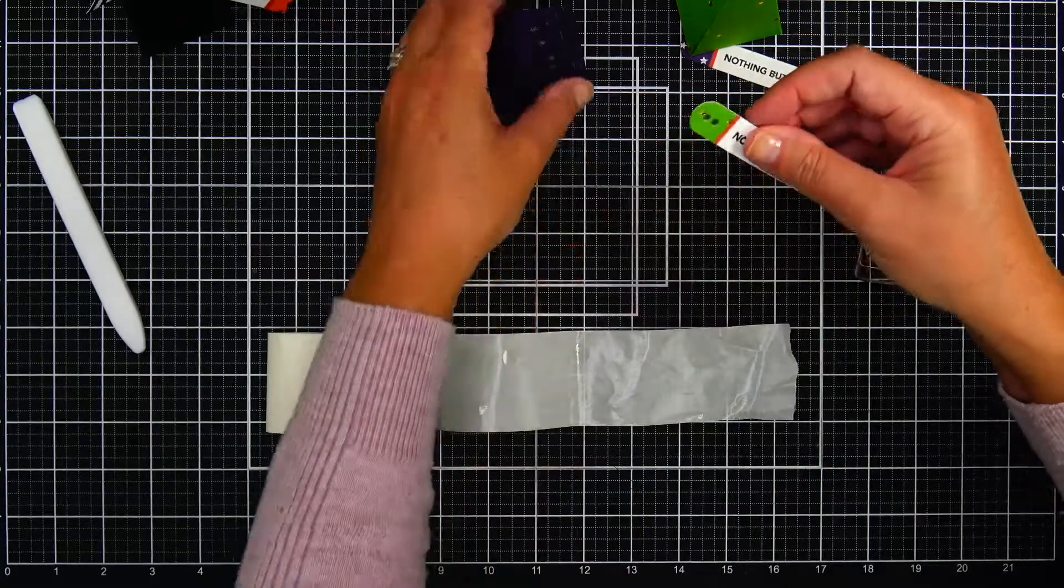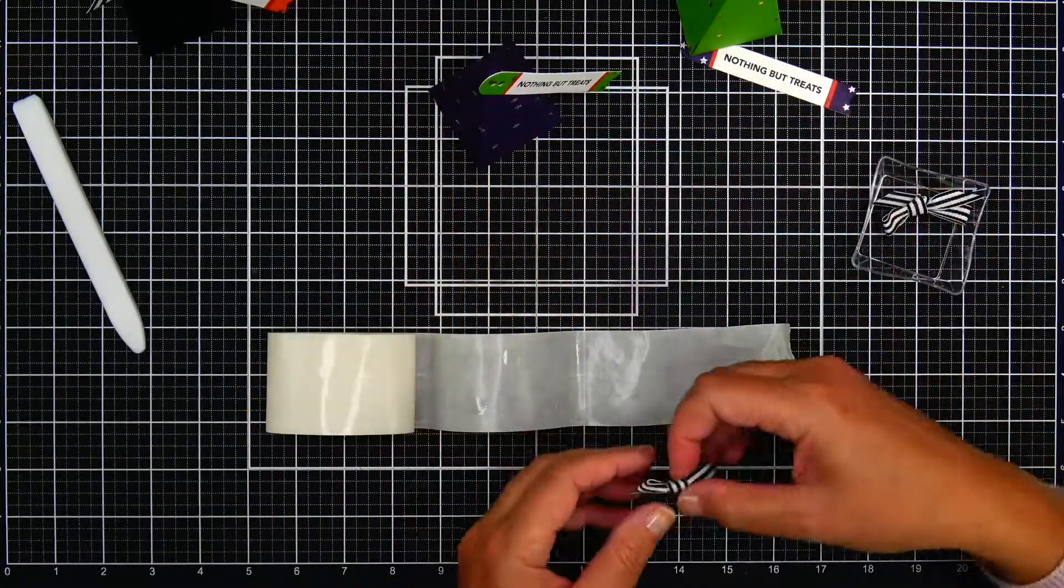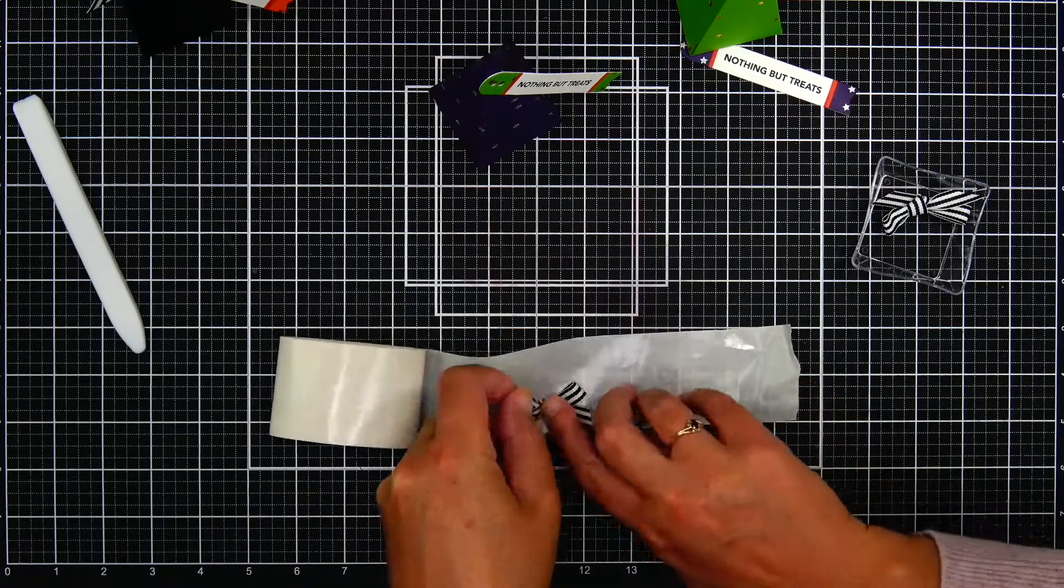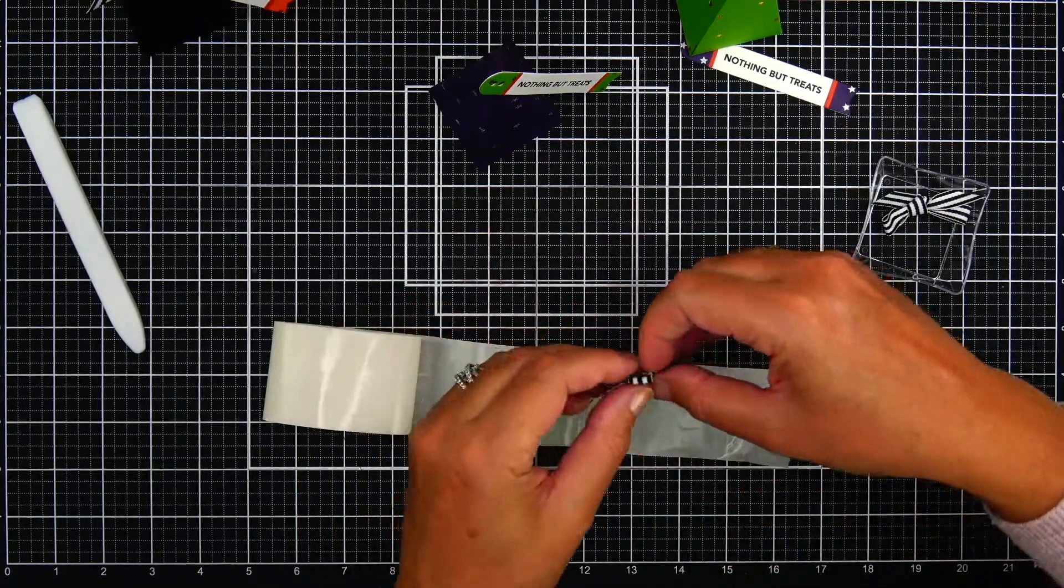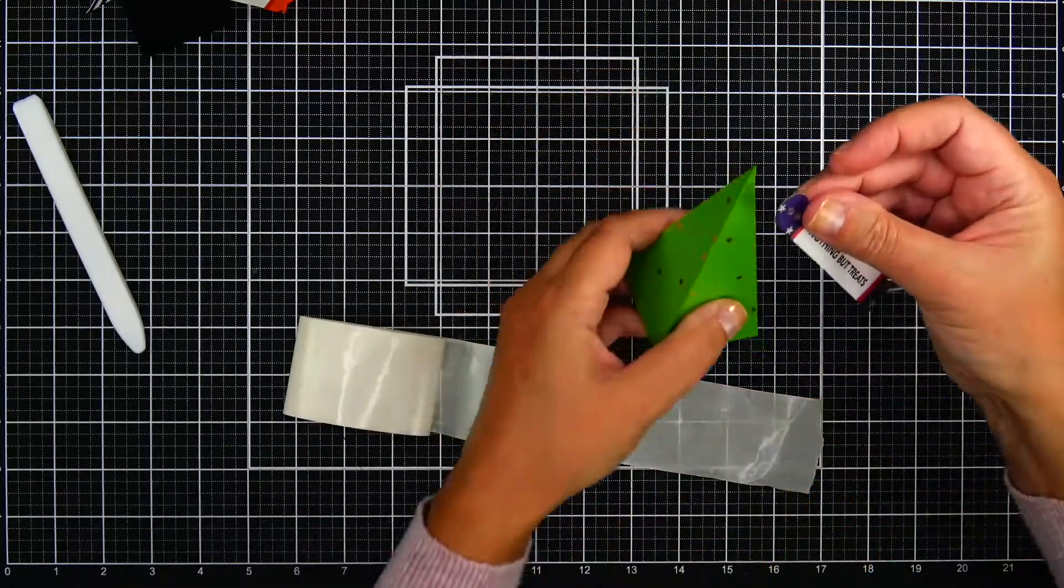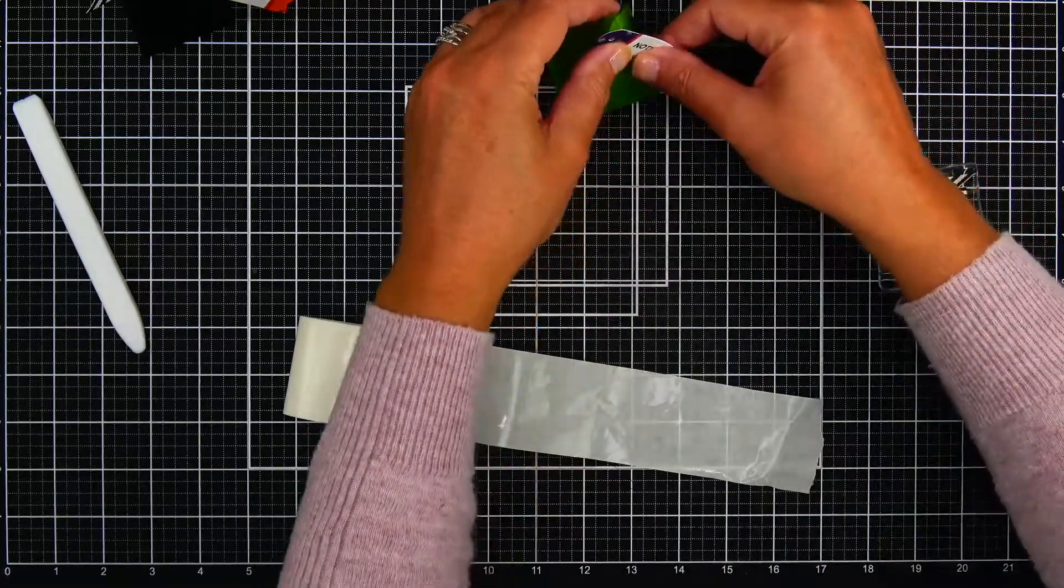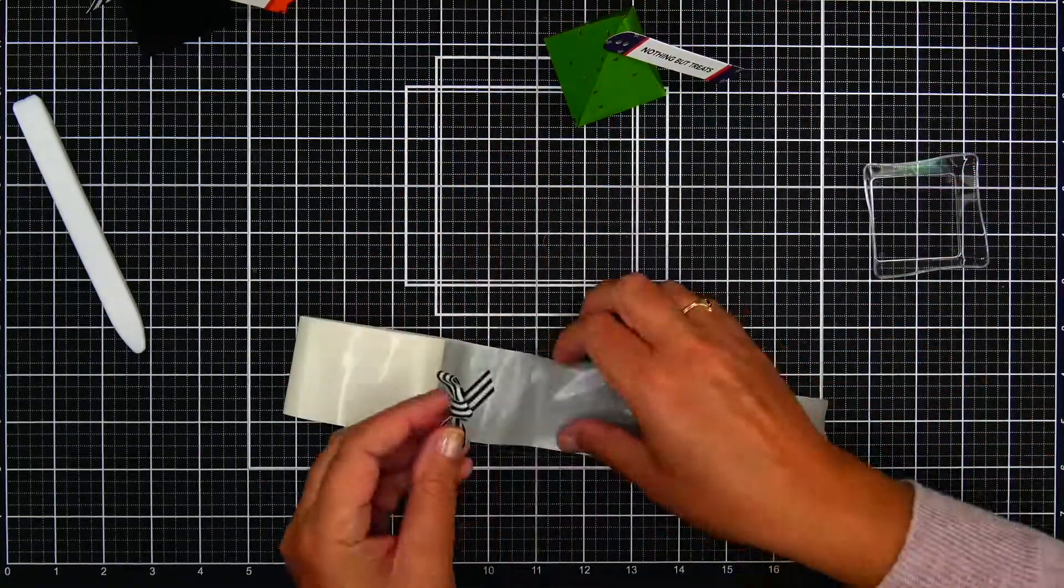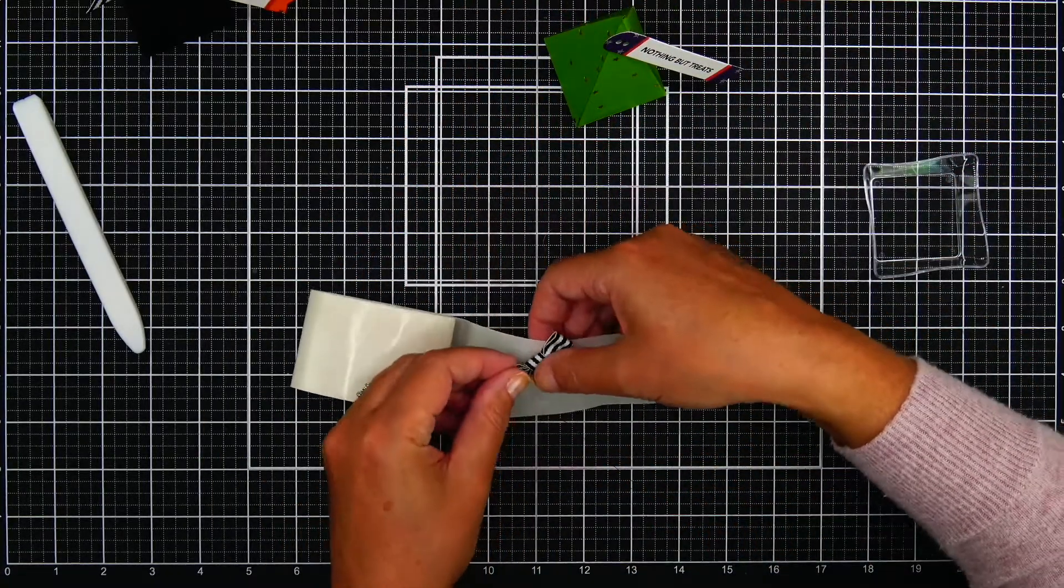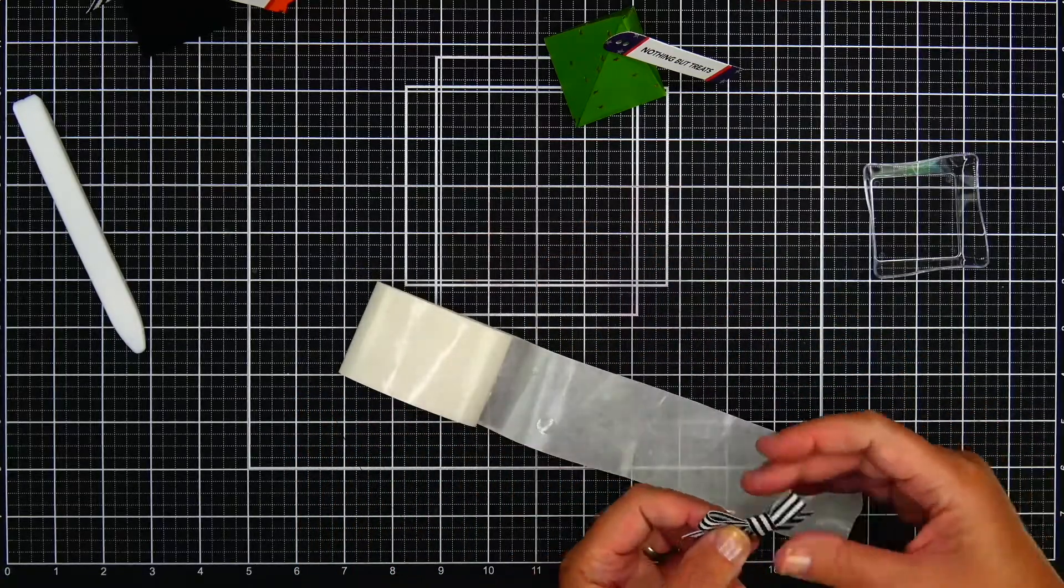I really wanted to use the black and white ribbon on this project, but the ribbon itself is way too thick to put through the circles that are on the tag. So bringing in the zots makes it look like I was able to tie the tag to the pyramid when I just used adhesive, little adhesive dots.